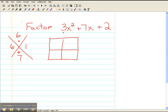The first term, the 3x², is going to go in my upper left-hand box. So I'm going to put 3x² in that box. The last term, the positive 2, is going to go into the bottom right box.